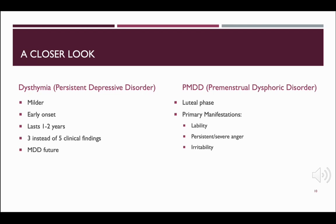Dysthymia disorder is a milder form of depression that usually has an earlier onset — it may begin in childhood or adolescence — and could last approximately one year for children and two years for adults. It contains only three of the clinical findings of depression discussed earlier and could eventually become major depressive disorder. PMDD, or premenstrual dysphoric disorder, occurs with the luteal phase of the menstrual cycle. Signs and symptoms include emotional lability — big mood swings — persistent or severe anger and irritability. These individuals may also have a lack of energy, overeat, and experience difficulty with concentration during that phase.